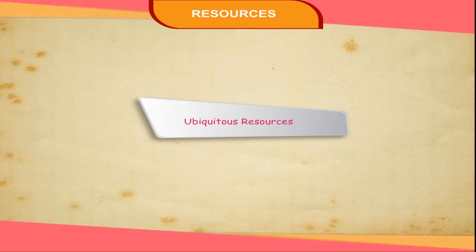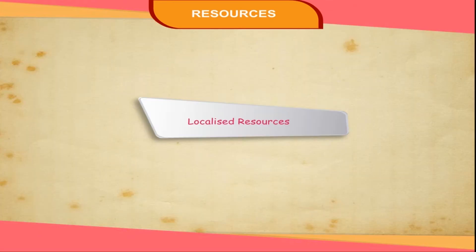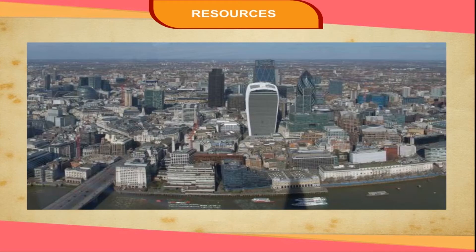Ubiquitous resources are those found everywhere, like the air that we breathe. Localized resources are those which are found in certain places only.